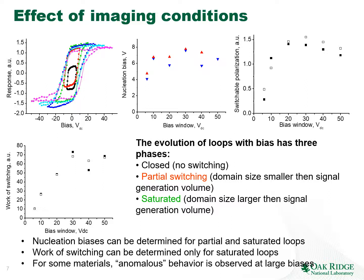Summarizing the evolution of hysteresis loops with bias: three phases exist — at small bias the loop is closed with no switching; at larger bias windows partial switching occurs where the domain size is smaller than the signal generation volume; then the signal saturates. Nucleation biases can be determined for both partial and saturated loops — a robust measure. The work of switching can be determined only for saturated loops. Anomalous behavior at large biases may arise from charge injection, electrochemical damage, or dielectric breakdown.